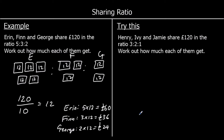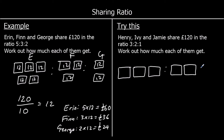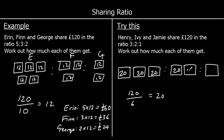And one for you to try — so give this one a go. So Henry, Ivy and Jamie share £120 in the ratio 3 to 2 to 1. So Henry's got three parts, Ivy's got two parts, and Jamie's got one part. So there are six boxes in total, six parts in total. They're each going to have the same amount in them, so 120 divided by 6. Well, 12 over 6 is 2, so it must be 20.